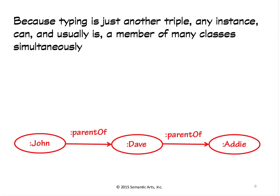Finally, because everything's a triple here — not just low-level assertions, but things like membership in classes — we can introduce new classes for instances that already exist. I had this imaginary family tree, and we inferred that one of these people was in the class of all people. People talk about schema on read and schema on write; this is essentially schema later and schema membership later.